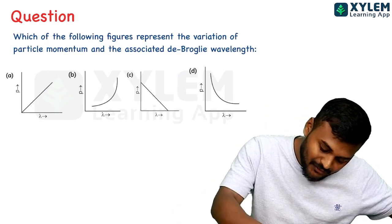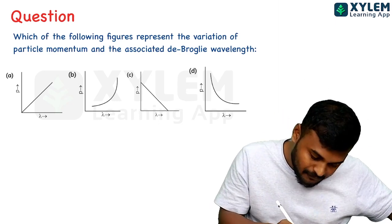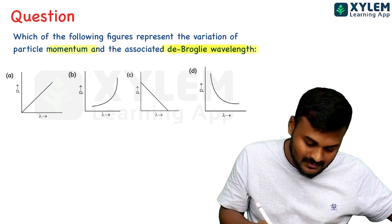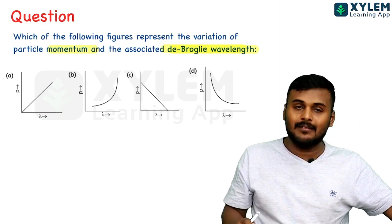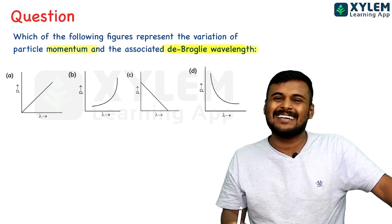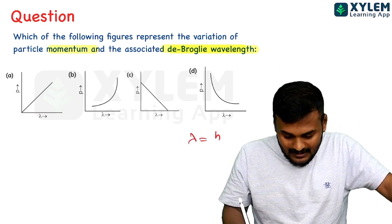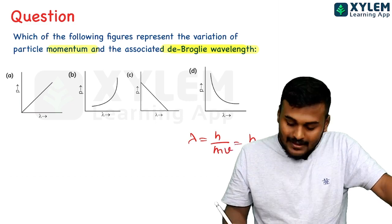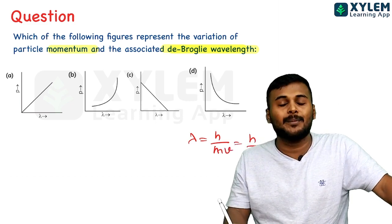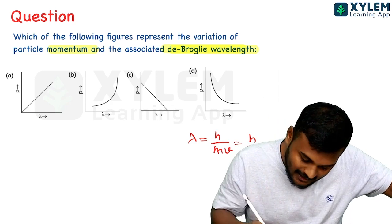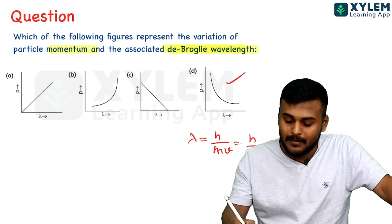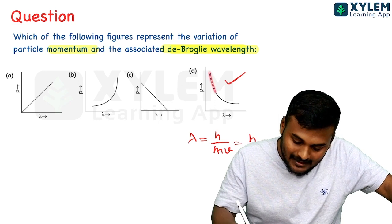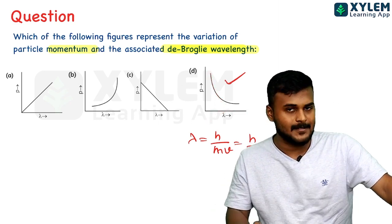Which of the following figures represents the variation of particle momentum and associated de Broglie wavelength? Lambda equals h by mv, which equals h by p. So lambda and p are inversely proportional. The graph will be inversely proportional. Option D is the right answer.